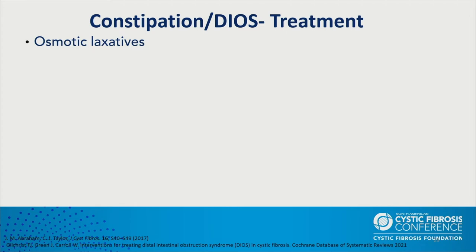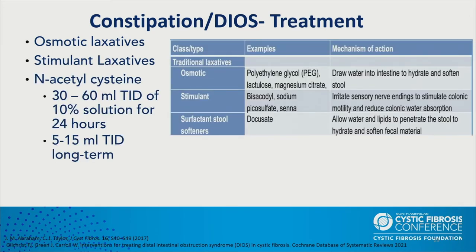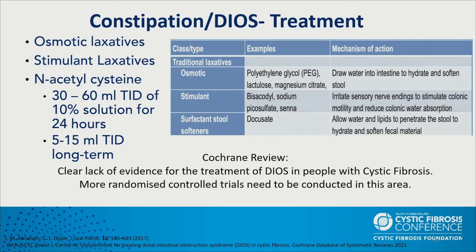Treatment options for constipation and DIOS include osmotic laxatives, stimulant laxatives, N-acetylcysteine (Mucomyst), which work by different mechanisms. Docusate is listed but rarely utilized. A Cochrane review that came out a few years ago highlights a clear lack of evidence for treatment of DIOS in people with CF. Most clinicians use various treatments based on anecdotal experience, case reports, and observational studies — more randomized controlled studies are needed. If patients don't respond to oral therapies or enemas, hyperosmolar contrast enema refluxing into the terminal ileum can help evacuate stool.